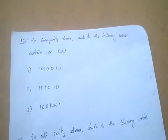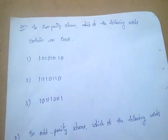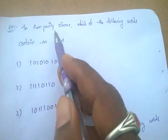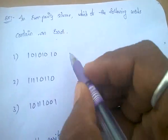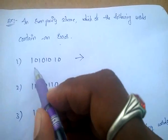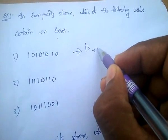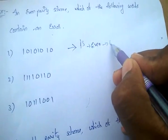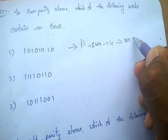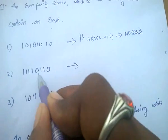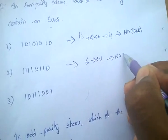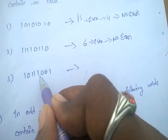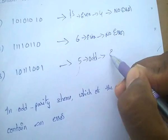How to find detecting errors: for even parity scheme, which of the following contains an error? The parity bit is already added. For even parity, the number of 1s must be even. Looking at one word: count 1, 2, 3, 4 — that is 4, which is even, so it has no error. Another word: 4, 5, 6 — 6 means even, no error. Another word: 4, 5 — 5 means odd, so it has an error.